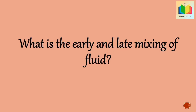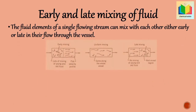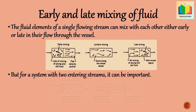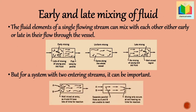Next question: what is early and late mixing of fluid? The fluid elements of a single flowing stream can mix with each other either early or late in their flow through the vessel. Early mixing and late mixing are also called maximum mixedness and complete segregation respectively. Usually this factor has little effect on overall behavior for a single flowing fluid. However, for a system with two entering reactant streams it can be very important — if two reactants A and B are well mixed at the entrance, they have lots of time for reaction, but if they are mixed at the exit, they don't have time for reaction, as shown in the figure.